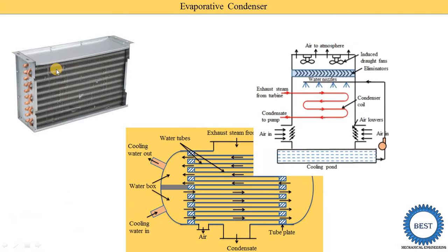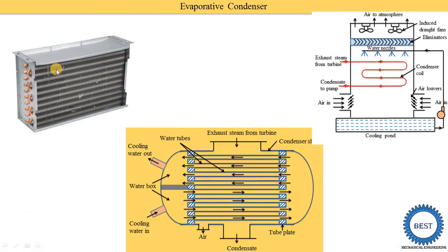The third type is the evaporative condenser, which I am going to explain in this video. Evaporative means the substance evaporates, and due to this evaporation, some cooling is produced.